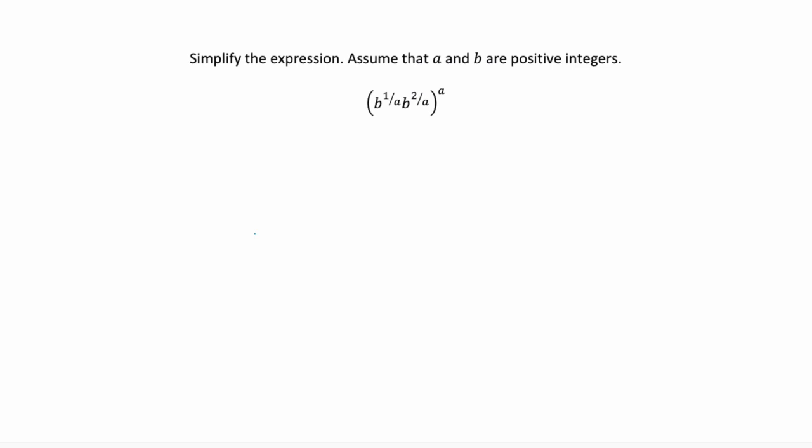Hey everyone! Professor Baldwin here. Let's look at one more example where we're going to use our exponent rules to simplify an expression. Here we're going to assume that the variables a and b are positive integers, and we're going to simplify the expression as much as possible.